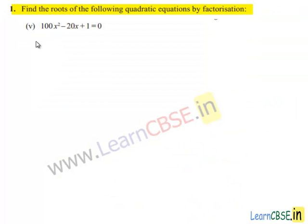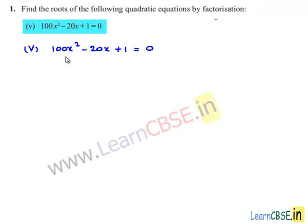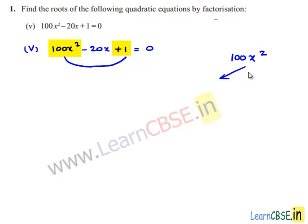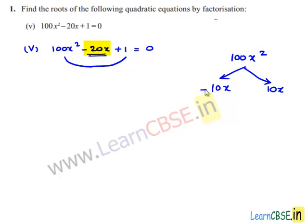Moving on to the fifth bit, the given quadratic equation is 100x squared minus 20x plus 1 equals 0. The product of the first term and the last term is 100x squared. We need two terms such that their product equals 100x squared and their sum equals minus 20x. Minus 10x and minus 10x: their product is plus 100x squared and their sum is minus 20x, so they satisfy both conditions. Replacing minus 20x with minus 10x and minus 10x, we get the expanded form.